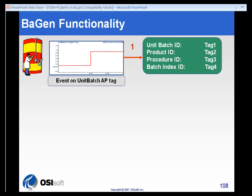The PI batch generator will then go look at four different tags: one tag for the unit batch ID, one tag for the product ID, one tag for the procedure or recipe ID, and finally, optionally, if this unit batch belongs to a larger batch, it will examine a batch index ID tag.